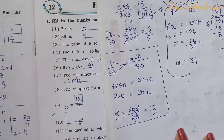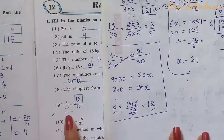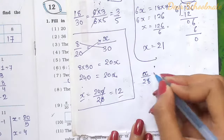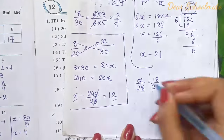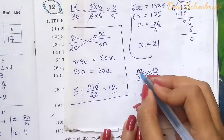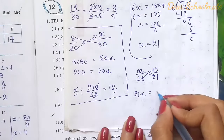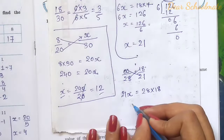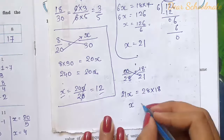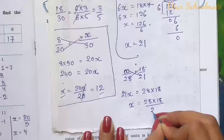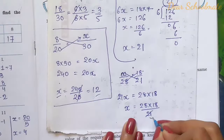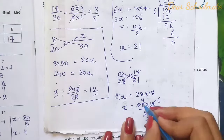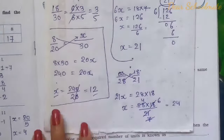Number 10: x by 28 equals 18 by 21. We cross multiply: 21x equals 28 times 18. Using cancellation — 7 divides 21 and 28, and 3 divides 18 — we get x equals 4 times 6, which is 24. Alternatively, multiply 28 by 18 and divide by 21 to get 24.